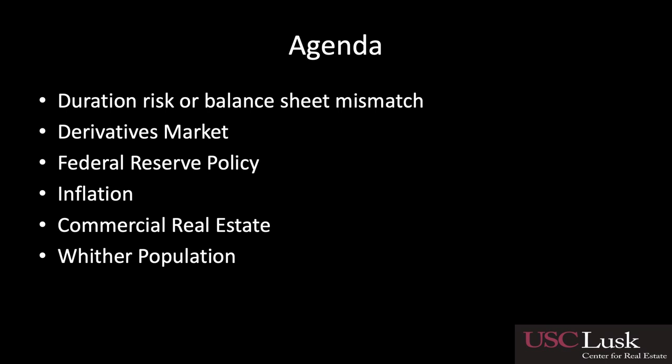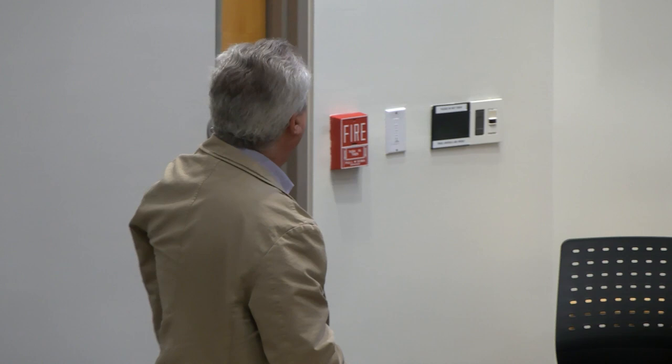I'm going to talk about something Mike talked about, which is duration risk or balance sheet mismatch. I'm also going to talk about the derivatives market — at least that's something Mike didn't talk about. And then what all this has to do with Federal Reserve policy, and why I think what the Fed is doing is really misguided. I think the Fed did need to raise rates. They should have started doing it earlier, but they should have stopped at three and a half percent.